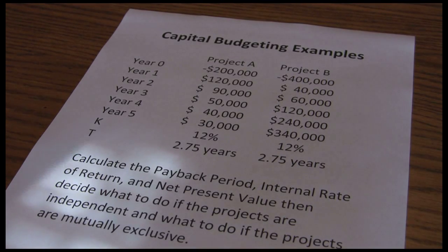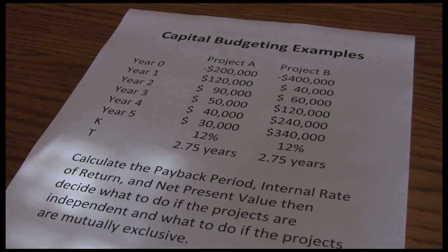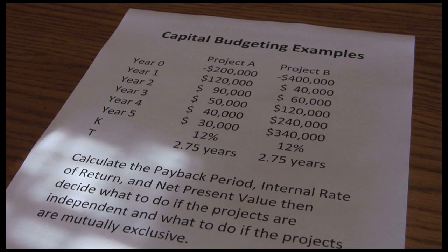This is going to be a three-part series looking at capital budgeting examples. We're going to go through the three capital budgeting methods: payback period, internal rate of return, net present value, and then make an analysis of which projects we should accept. In the first video we're going to introduce the problem and calculate the payback period. Second video we'll do the internal rate of return and net present value, and then in our last video we'll make our decision of how we evaluate the information we calculated, which project or projects should we take.